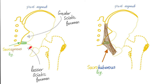What are the structures passing through the lesser sciatic foramen? You have the tendon of the obturator internus, and some structures that just emerge from the greater foramen and now go to the lesser foramen — including the nerve to the obturator internus, internal pudendal vessels, and pudendal nerve.